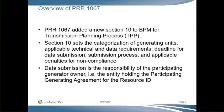PRR 1067 added the new Section 10 to the BPM for Transmission Planning Process. It became effective August 1st, 2018. The new Section 10 defines five different categories of generating units, establishes the technical and data requirements for each category, provides the deadlines for submission of data, outlines the submission process, and provides the determination of compliance and the result of non-compliance. The data submission is the responsibility of the participating generator — the entity that holds the PGA for the specific resource ID. All the data requirements have been established with respect to resource IDs in the ISO market.